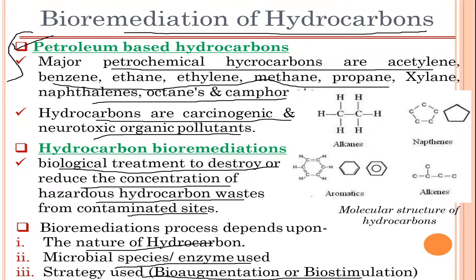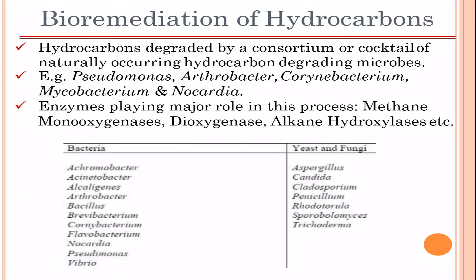Since hydrocarbons are not safe for the environment, we need to degrade or bioremediate them. The bioremediation of hydrocarbons depends on three factors: the nature of the hydrocarbon, the microbial species and enzymes used, and the strategy used — which can be bioaugmentation or biostimulation. Hydrocarbons are degraded by a consortium or cocktail of naturally occurring hydrocarbon-degrading microbes.